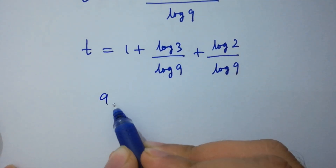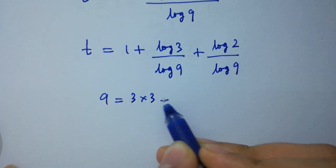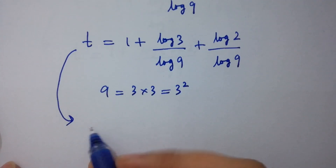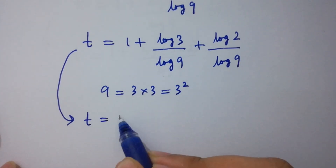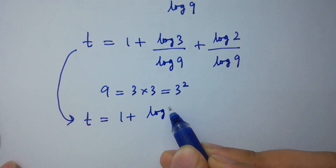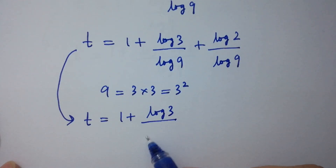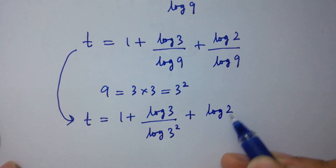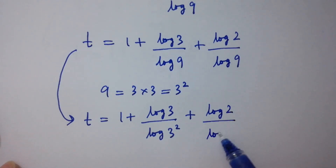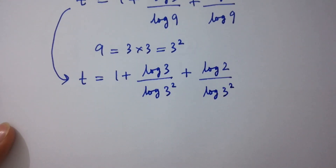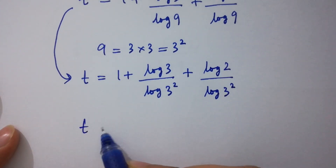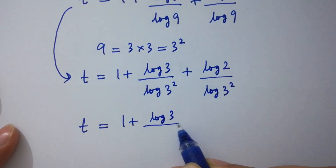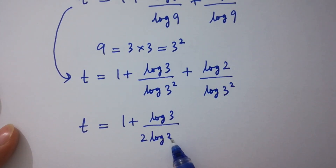Since 9 equals 3 × 3 which equals 3 squared, t equals 1 plus log 3 over log(3 squared) plus log 2 over log(3 squared). This gives t equals 1 plus log 3 over 2 log 3.